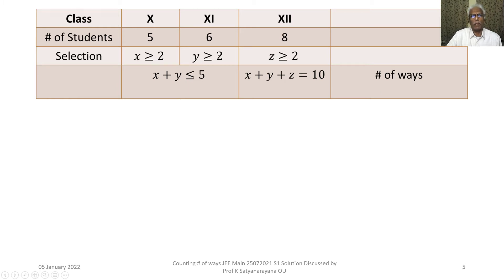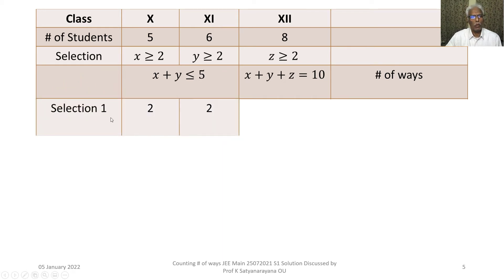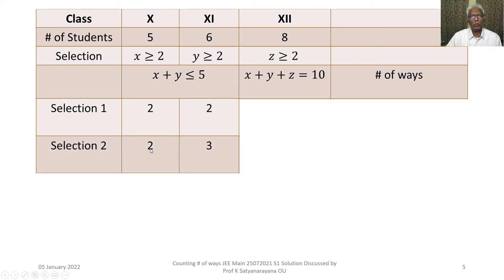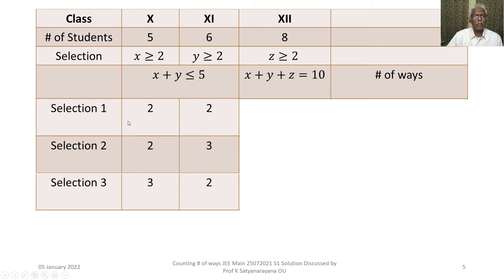With x ≥ 2, y ≥ 2, and x + y ≤ 5, there are exactly 3 possibilities. Selection 1: 2 from class 10 and 2 from class 11, giving x + y = 4 ≤ 5. Selection 2: 2 from class 10 and 3 from class 11, giving x + y = 5. Selection 3: 3 from class 10 and 2 from class 11, giving x + y = 5.